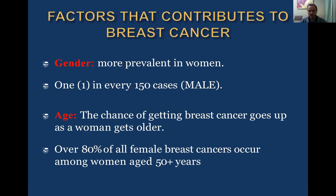Some words about the etiology of breast cancer. First of all, gender — it is more prevalent in women, but it can also occur in males, about 150 times less. Age is also a factor: the chance of breast cancer occurrence increases with age. After 50, the incidence is very high in females.